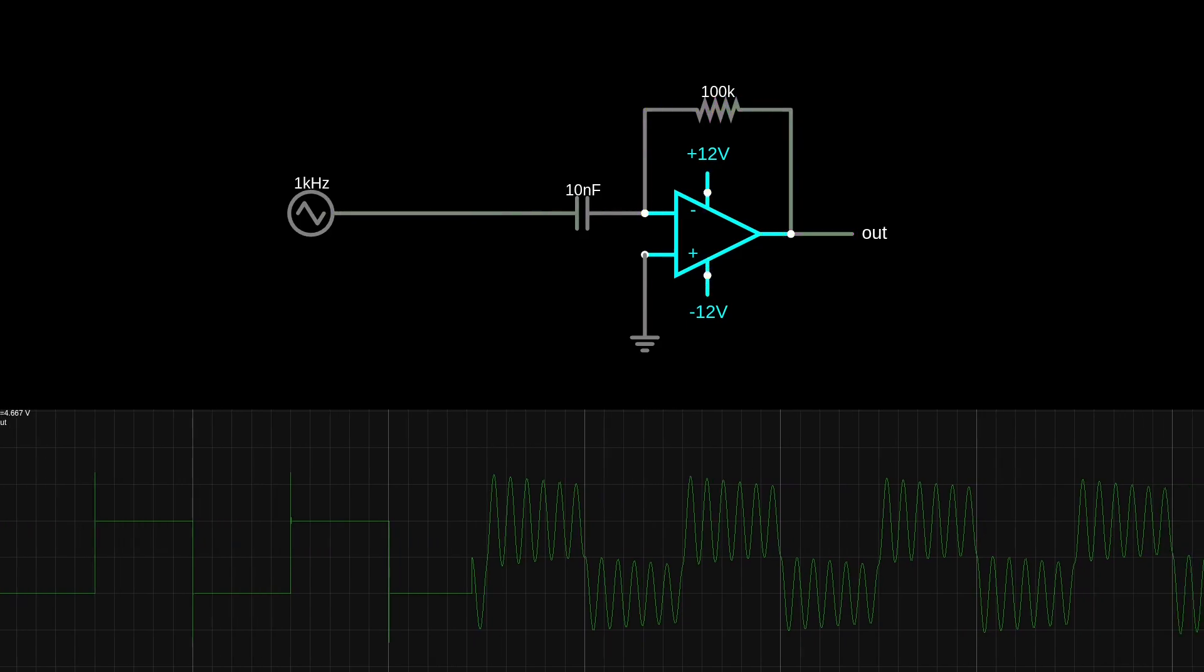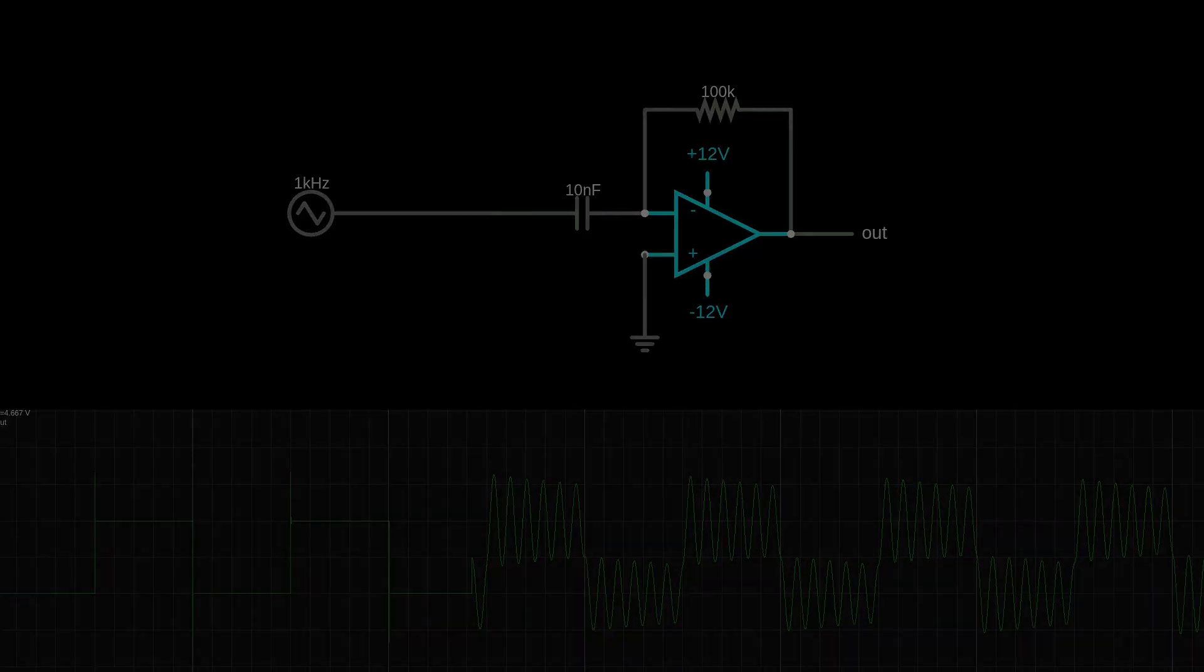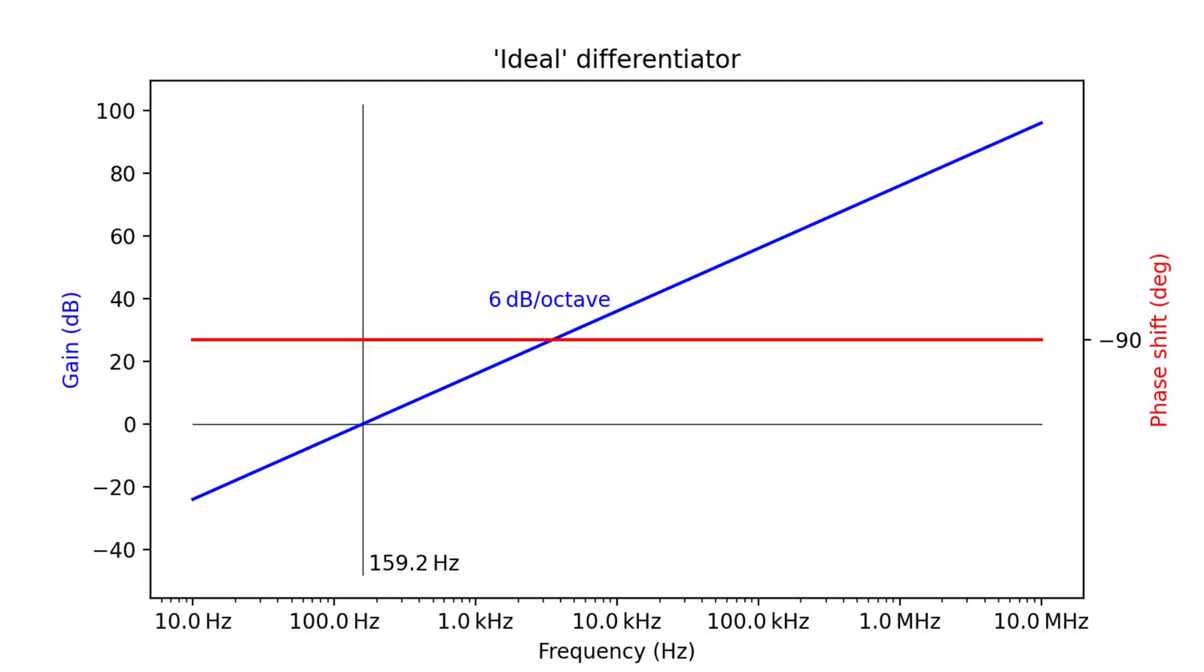This is a mirror image of the problems we had with the integrator. There, the intermittent gain of the circuit at DC led to tough problems with drifts caused by voltage offsets and bias currents. Any non-zero offset at the input caused an endlessly shifting voltage at the output. Here, instead, we have gain increasing without bound the farther from DC that we get, and we have problems with the huge gain at high frequencies triggering oscillations from any sudden change.